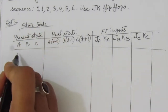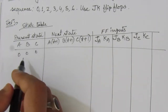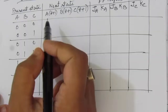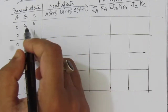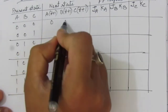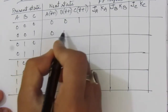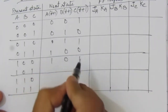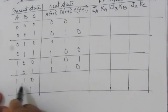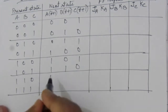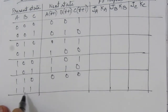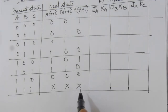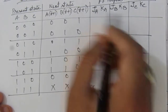The present state starts from 0 (000). With 3 bits we have 8 combinations, from 000 to 111. The repeated sequence is 0, 1, 2, 3, 4, 5, 6. So 0 (000) goes to 1 (001), 1 goes to 2 (010), and similarly we fill in up through 6 (110), which goes back to 0 (000). For state 7 (111), it is not given in the question, so we consider it a don't care condition. Since it's a don't care, the J and K inputs for that row will also be don't care.